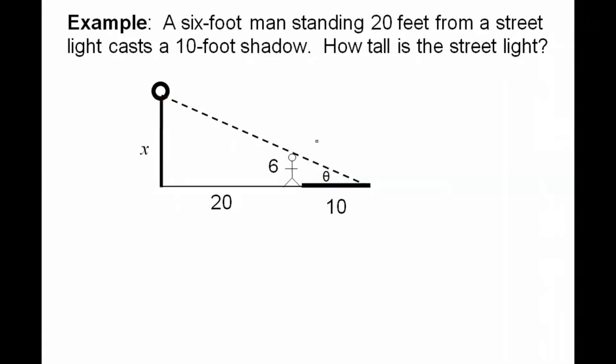So when I look at my large triangle, I know what I'm looking at is I have an opposite and an adjacent. So I know that I'm looking at tangent. So the tangent of theta is x over 30. Now the problem with this is I have two unknowns. I don't know what theta is. I don't know what x is.